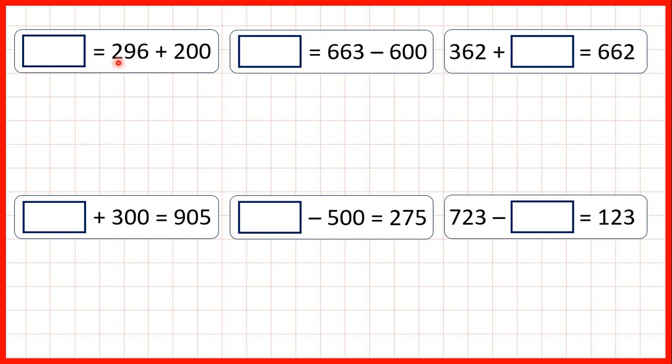So we need to work out 296 plus 200. If we highlight our hundreds digits, 2 plus 2 is 4, so that means our answer is 496. We still have the 9 tens and 6 ones because we're not adding any tens or ones, we're adding a multiple of 100.